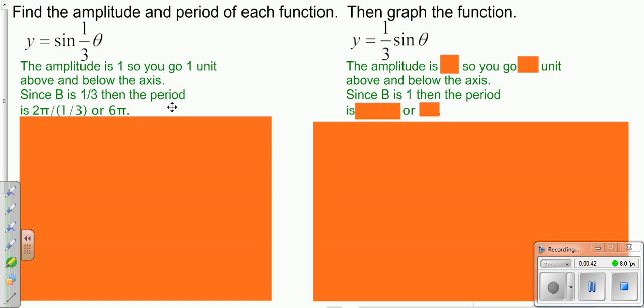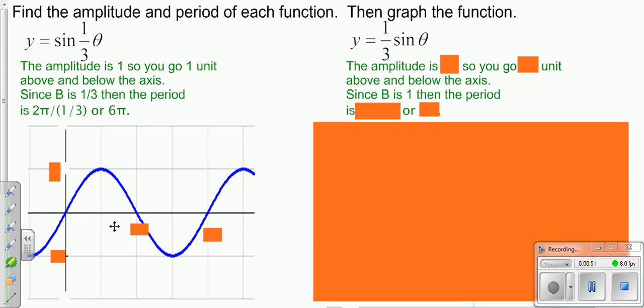So to graph something like this, you're going to start off with your basic, in this case, sine graph. Remember, sine starts at the origin and goes up. So we start off with that. Once you have that graphed, then you go ahead and put your tick marks on.